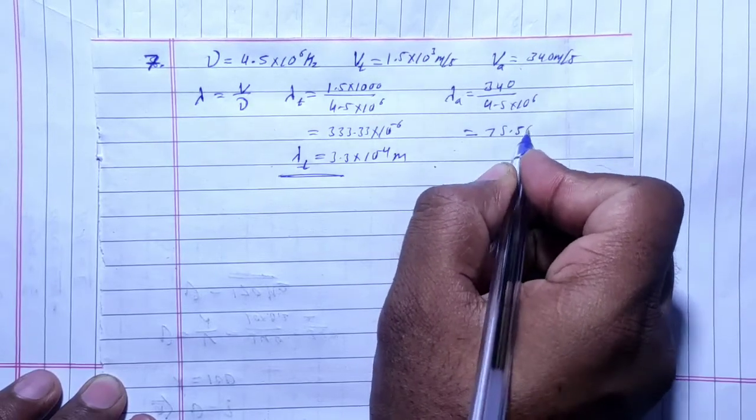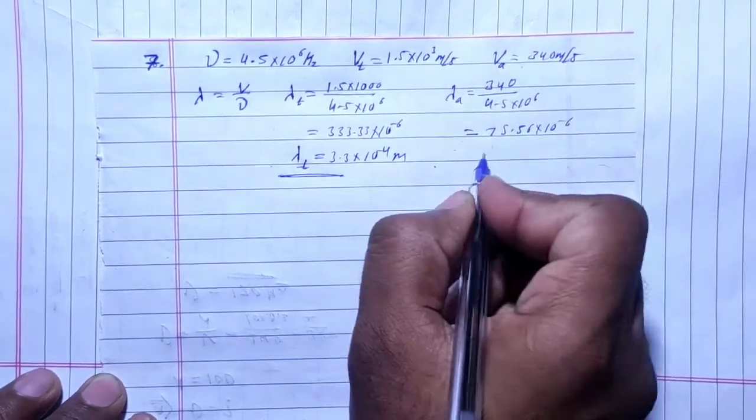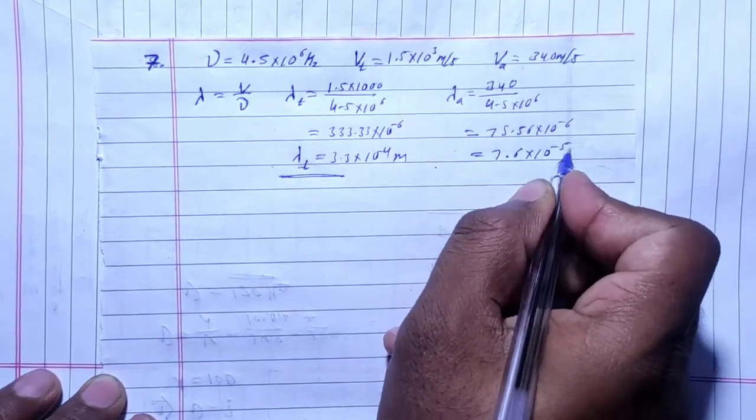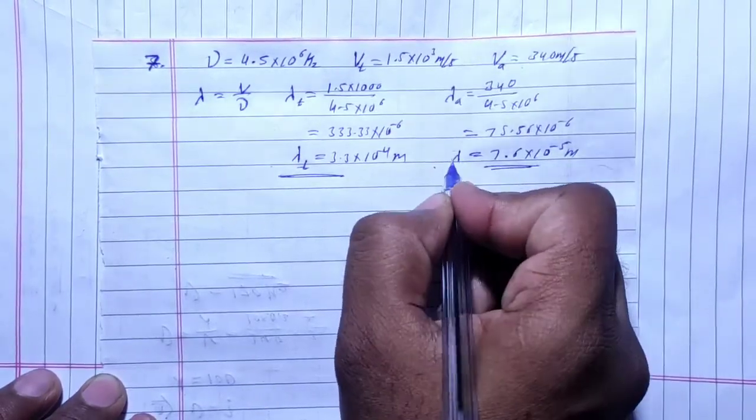This equals 75.56 × 10⁻⁶ or 7.6 × 10⁻⁵ meters. These are the wavelengths in air and tissue.